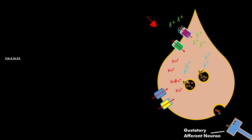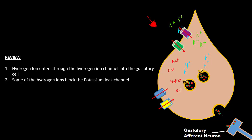So to quickly review, hydrogen ion enters through the hydrogen ion channel into the gustatory cell. Some of the hydrogen ions block the potassium leak channel. Hydrogen ion and the buildup of potassium ion begin to depolarize the cell. A graded potential is then activated.